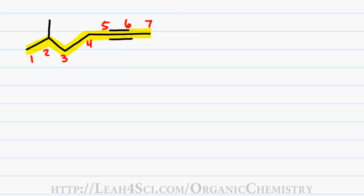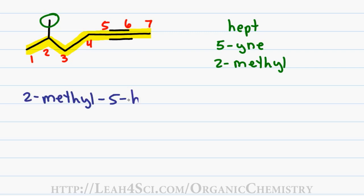Seven carbons in my parent chain gives me a first name of hept, hitting my triple bond at carbon 5 gives me a last name of 5-yne and my methyl group substituent on carbon 2 gives me 2-methyl. Putting the name together, I have 2-methyl-5-heptyne.